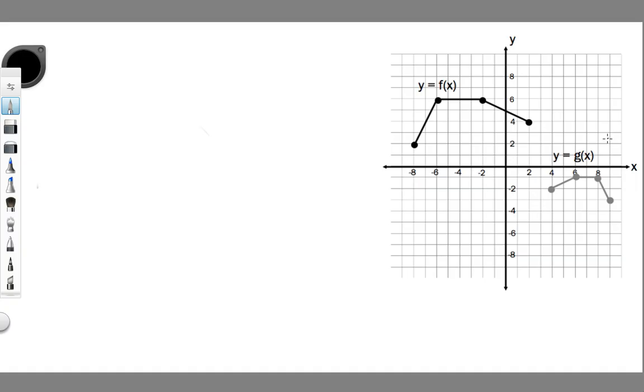What we want to do is figure out what the transformed equation of this guy is in terms of f of x. So essentially what we're trying to figure out is y equals a f of b times (x minus h) plus k.